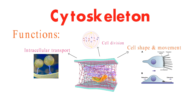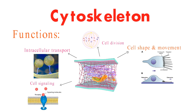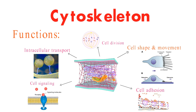The cytoskeleton can also be involved in cell signaling. For example, when a cell receives a signal from another cell, the cytoskeleton can relay that signal to other parts of the cell. Cell adhesion: the cytoskeleton helps to anchor cells to each other and to the extracellular matrix.